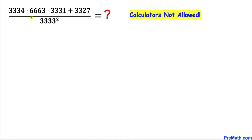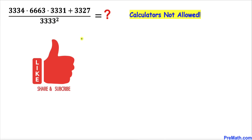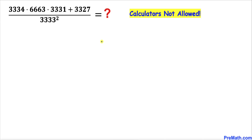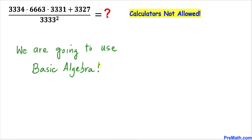Welcome to pre-math. In this video we are going to simplify this given rational expression: 3334 times 6663 times 3331 plus 3327, divided by 3333 squared. So let's go ahead and get started with the solution — we are going to use basic algebra to simplify this given problem.